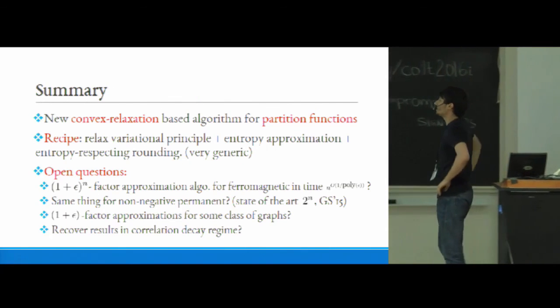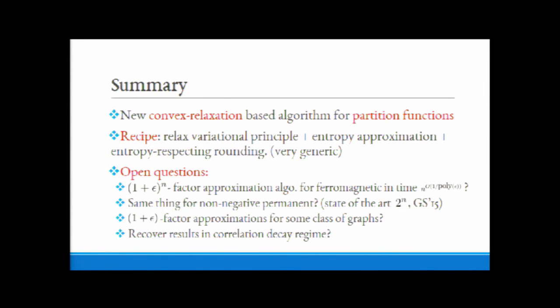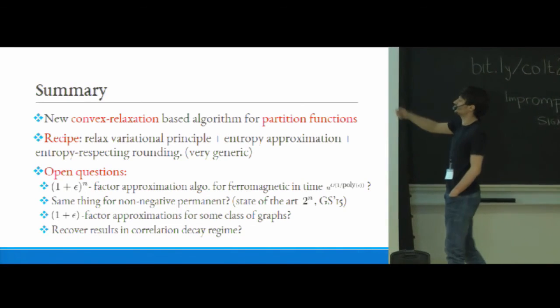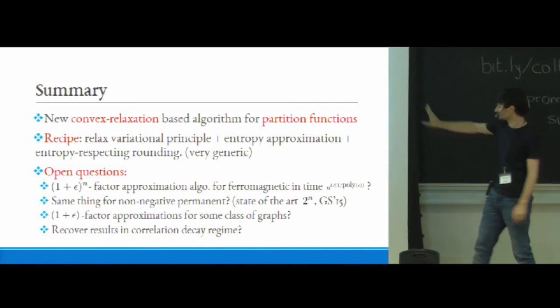So in summary, what I gave you here is a new basically algorithm based on convex relaxations for approximating partition functions. The recipe was basically to come up with, to essentially relax the usual variational principle, come up with some entropy approximations and roundings which respect these entropy approximations. But this is kind of pretty generic and actually works for many other things other than just Ising models. And there are many, many open questions which you might want to ask here. So for example, probably from a theoretical perspective the most tantalizing one is to get like a (1+ε) to the n factor approximation for the ferromagnetic Ising case in time something like n to the 1 over poly of ε. And the same thing for non-negative permanents, and bear in mind the state of the art here is quite sad. There's only a 2^n factor approximation which is actually fairly recent, due to Gurvits and Samorodnitsky. On a more practical side, you might want to ask whether or not you can get a (1+ε) factor approximation for some nice class of graphs.